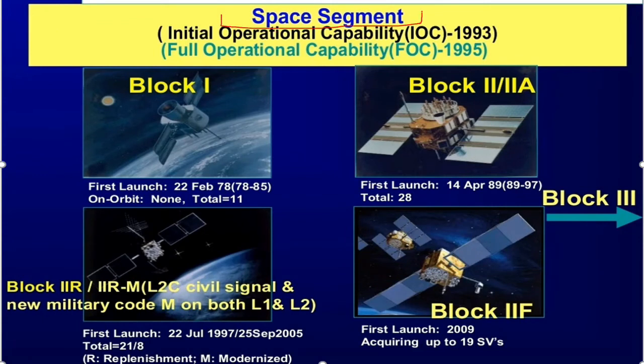Let's talk about the space segment. In the space segment, satellites were launched in different phases which were named Block 1, Block 2, 2A, Block 2R, 2RM, Block 2F, and Block 3. Block 1 first launched on 22 February 1978 with a total of 11 satellites. Block 2 and 2A first launched on 14 April 1989 with a total of 28 satellites.